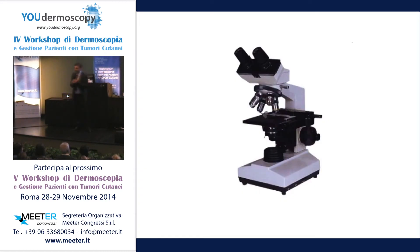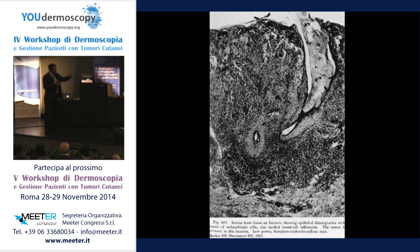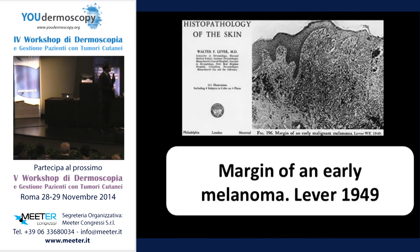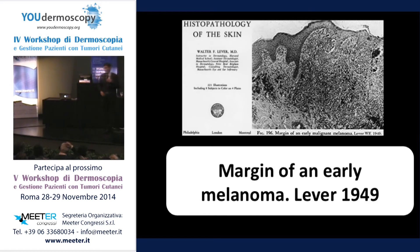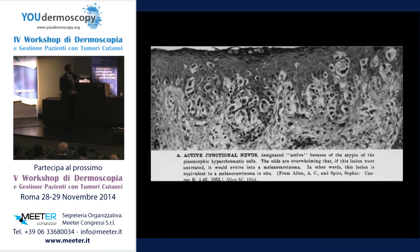Now what about microscopy and dermatopathology then? These are textbook photos from dermatopathology books in 1947 — the famous Lever book. Here, from 1947, this is what they called the 'margin of an early melanoma.' Is this an early melanoma? This is probably a one-centimeter-thick lesion. So this is what they called an early melanoma in the 1940s–70s. There were other misdiagnoses too.